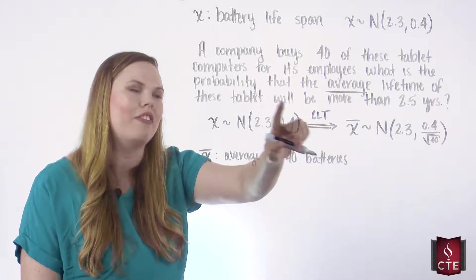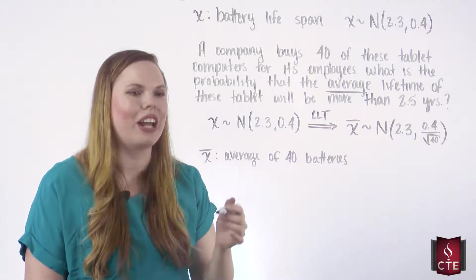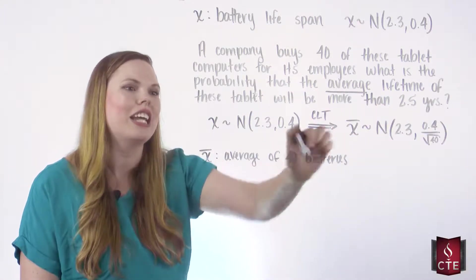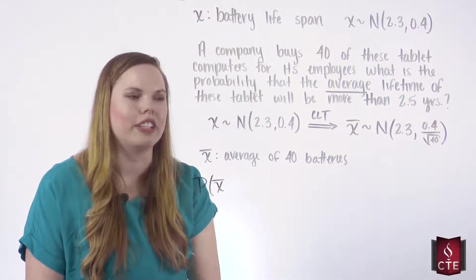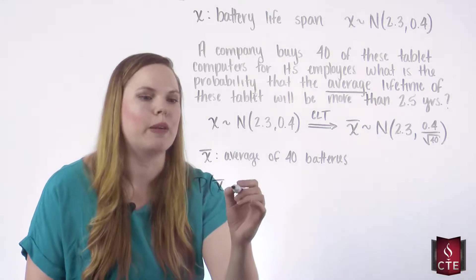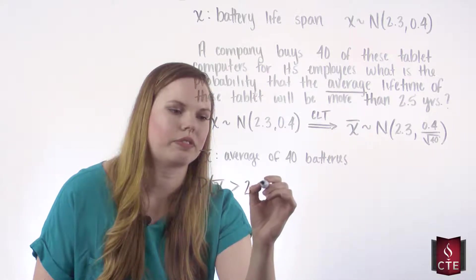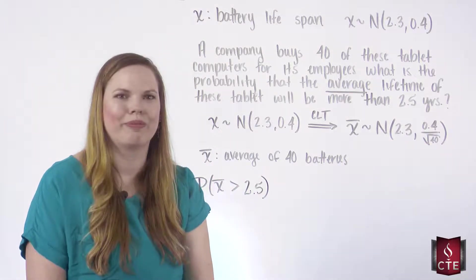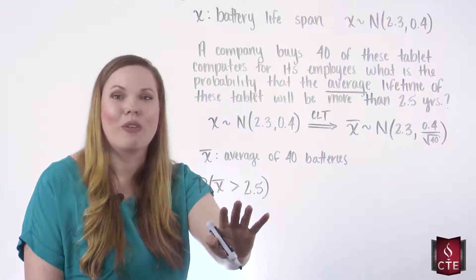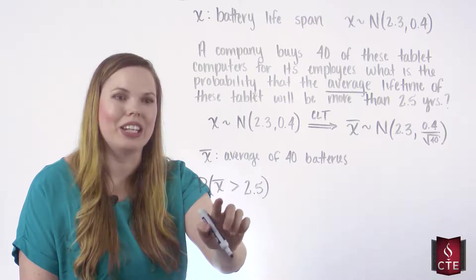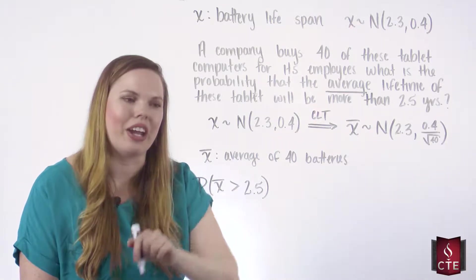Now it's asking for the probability that it will be more than two and a half years. Taking all these words, we're asking for the probability that X-bar — the average of these 40 batteries — will be greater than two and a half years. That's simply the probability that the average of these 40 is going to be greater than 2.5 years.